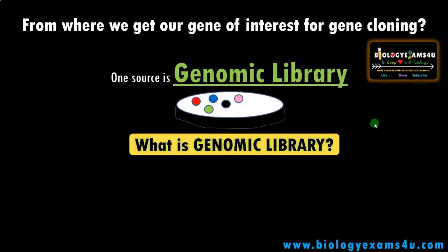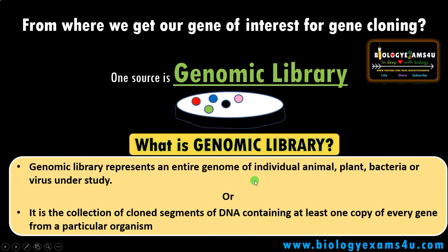A genomic library, as the term indicates, is a library or collection of cloned DNA fragments of an organism. It represents the entire genome of an individual animal, plant, bacteria, or virus under study — or it is a collection of cloned segments of DNA containing at least one copy of every gene from a particular organism.